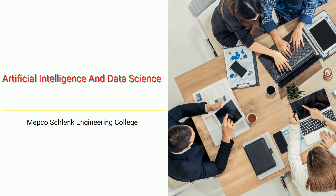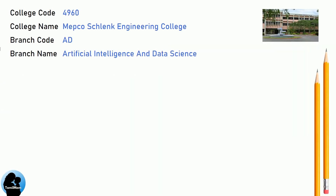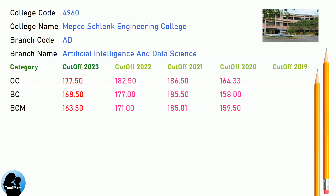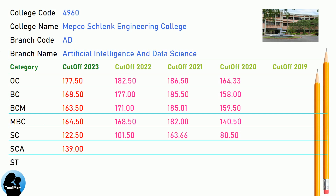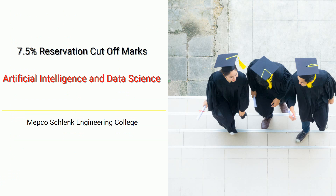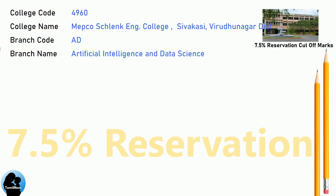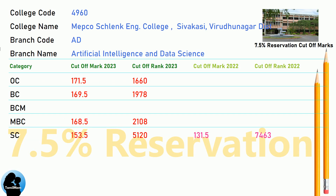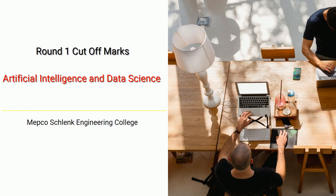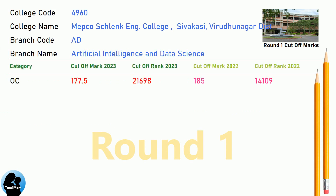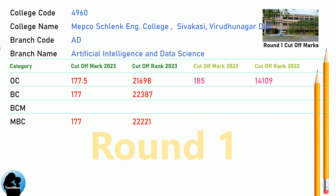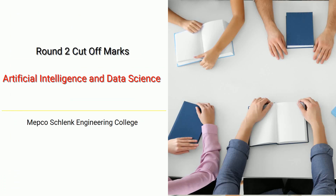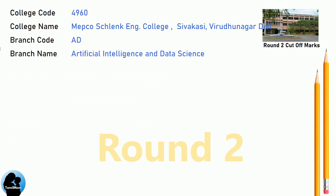Cut-off for Mepco Schlenk Engineering College in Artificial Intelligence and Data Science. 7.5 Reservation Cut-off, Round 1 Cut-off, and Round 2 Cut-off for Mepco Schlenk Engineering College in Artificial Intelligence and Data Science.